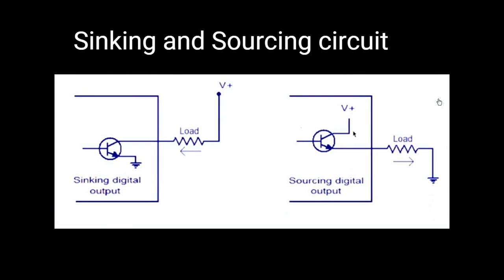This is the sourcing and sinking circuit. Sinking and sourcing are terms used to define the flow of direct current in an electric circuit. A sinking input or output circuit provides the path to ground for the electric flow. A sourcing circuit is where the input or output provides the voltage source for the electric flow.